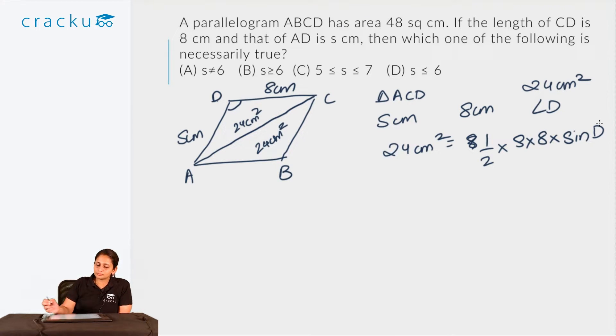Based on this, I can see that S sin D is equal to 6. Now I know that sin D is less than or equal to 1 because the max value of sin of any angle is 1 when that angle is equal to 90 degrees. At sin of 90 is 1 and that is the max value that sin can take.